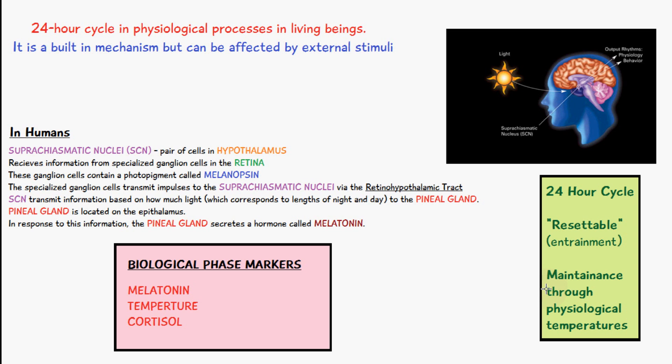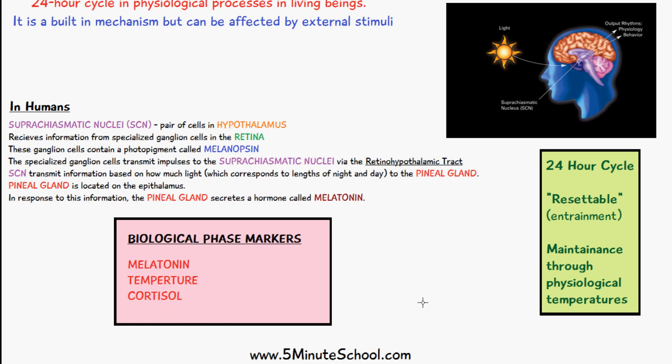There are some other biological phase markers which are used to time the circadian rhythm. These are three factors which are measured: melatonin synthesis, temperature, and cortisol production. Melatonin is secreted at nighttime when there's not that much light, which is why you're able to sleep. It's not produced at all during the day when there's a lot of light.